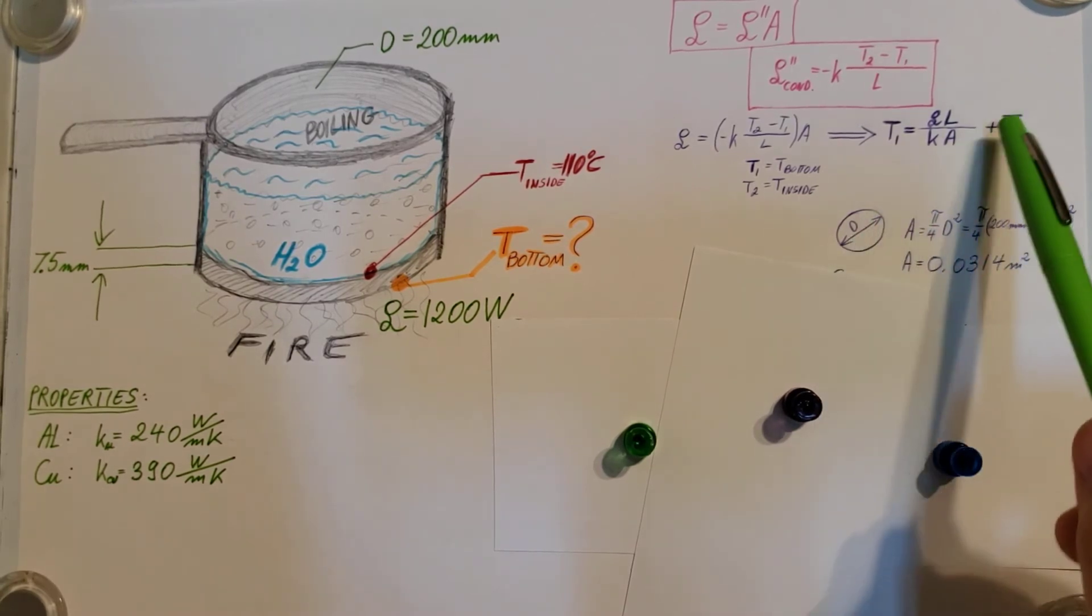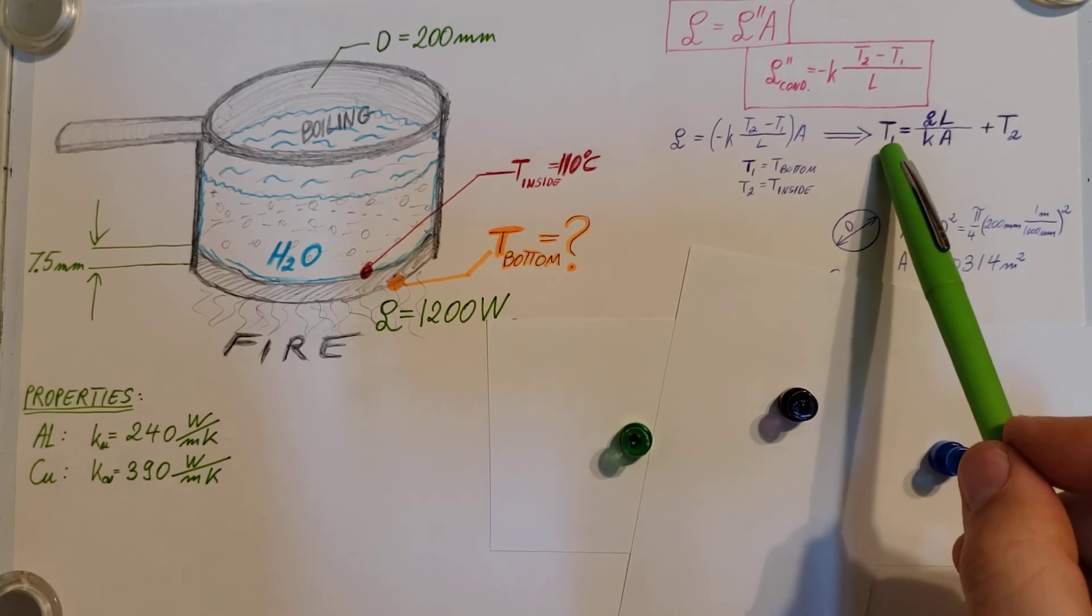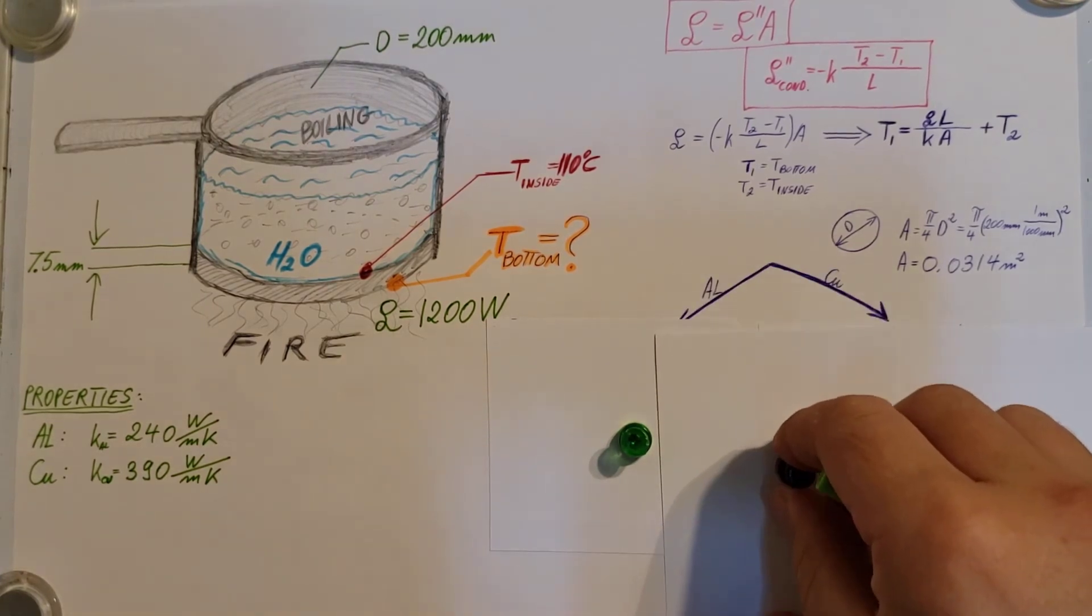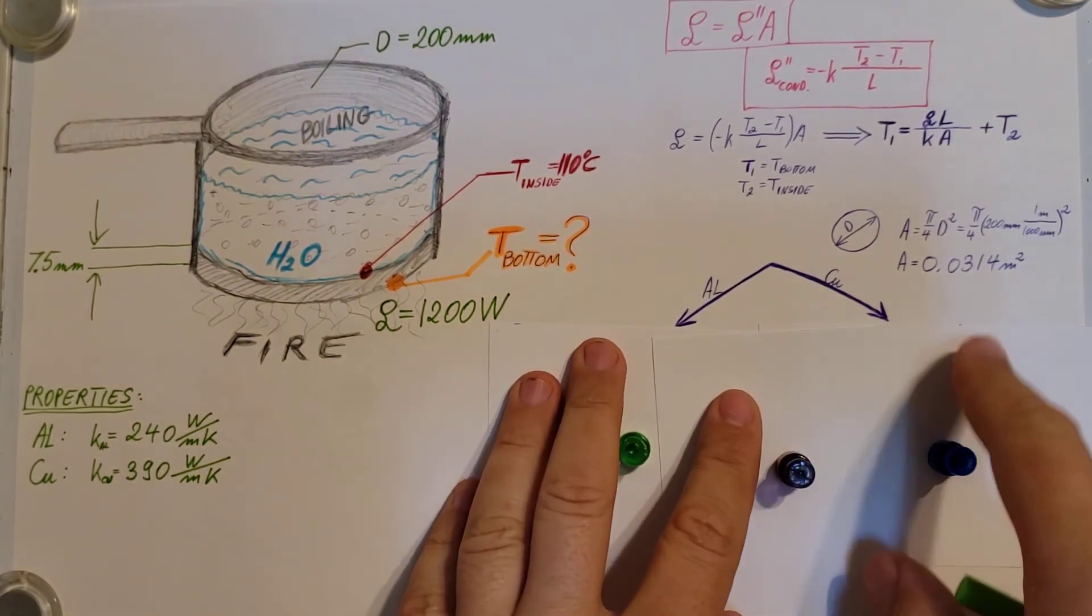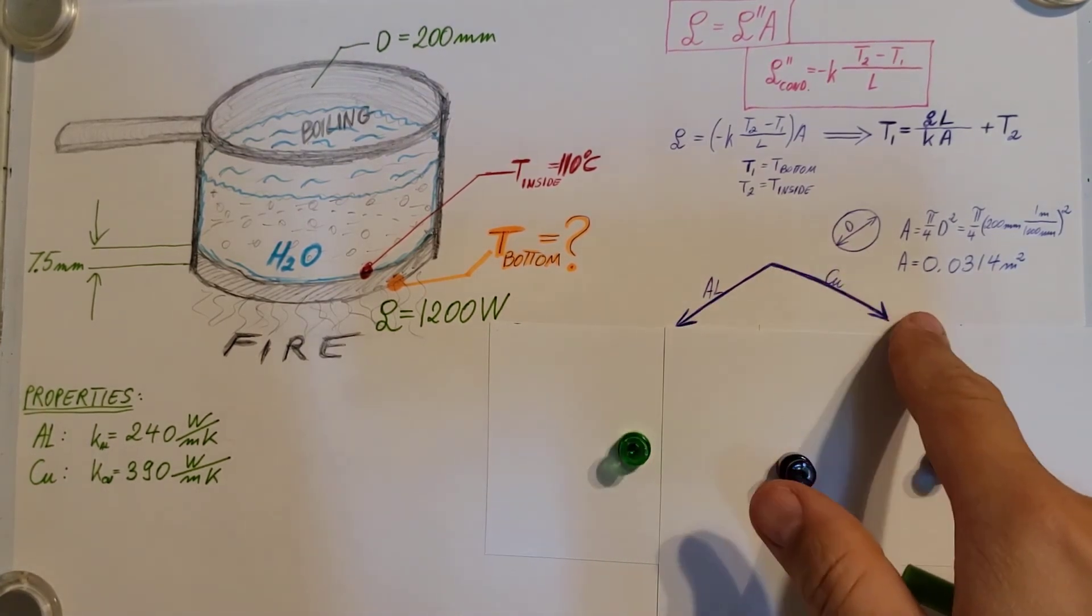From here, we're going to need to use this formula to find our T1, but we need it for two different properties, two different pans. So I'm just going to split up my paper right here into aluminum and copper.